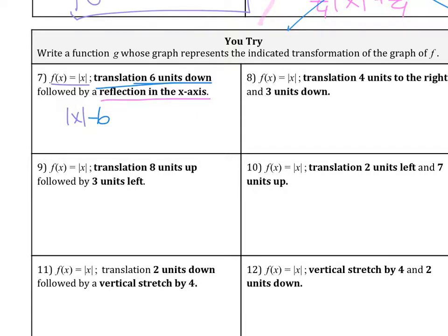The next thing is reflection in the x-axis. Remember, I'm going to multiply the whole function by a negative, and you have to distribute. Therefore, this new function becomes g(x) = -|x| + 6. So we translated 6 units down first, then we did the reflection in the x-axis. Notice this is what the function becomes.